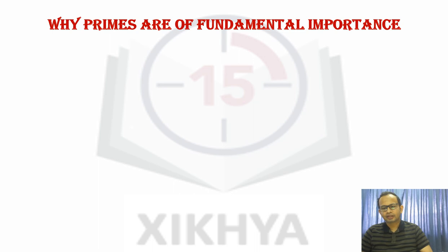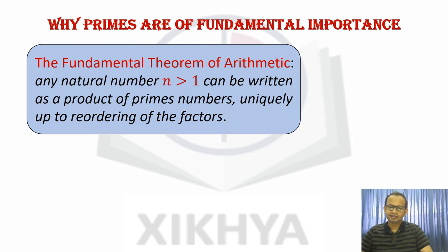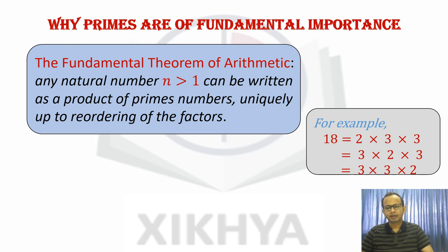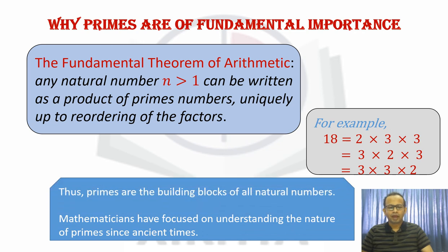So let's now discuss why prime numbers are of such importance. It is due to a very classical theorem known as the Fundamental Theorem of Arithmetic. What does it say? It says that any natural number n bigger than 1 can be written as the product of prime numbers, and it is unique up to the ordering of the factors. So what do we mean by that? Suppose let's take the number 18. Then we can write it as product of prime numbers, and it is essentially unique because we can change the order of the factors. But up to that, this is unique. And so prime numbers are basically the building blocks of all natural numbers. So it's of primary importance to us. And that's why mathematicians have focused on understanding the nature of primes from ancient times.